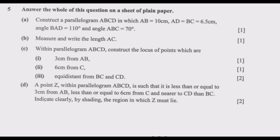Question B: measure and write the length of AC. Question C: within parallelogram ABCD, construct the locus of points which are 3 cm from AB, 6 cm from C, then equidistant from BC and CD. Question D: a point Z within parallelogram ABCD is such that it is less than or equal to 3 cm from AB, less than or equal to 6 cm from C, and nearer to CD than BC. Indicate clearly by shading the region in which Z must lie.